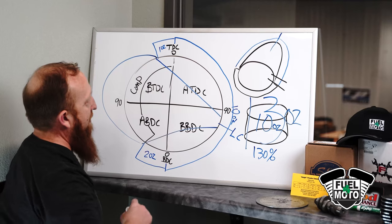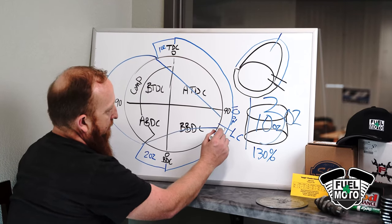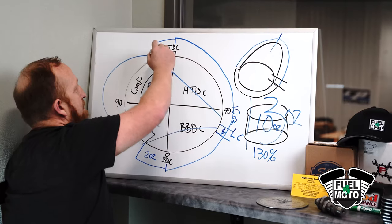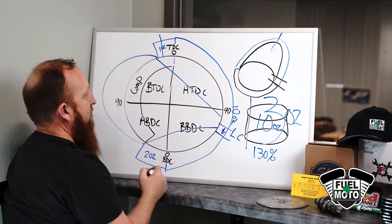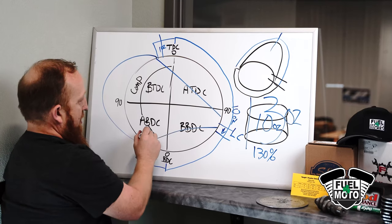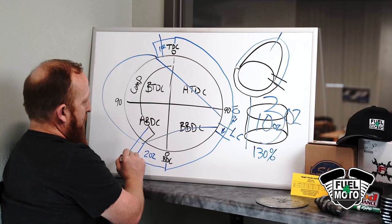Now if you select a camshaft that has a higher lobe center number, but the same duration, you would effectively have less overlap, but more after bottom dead center duration.